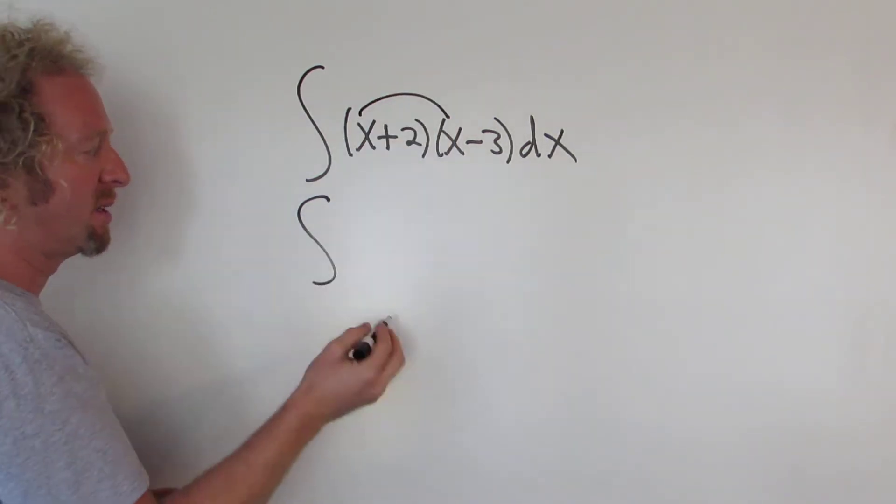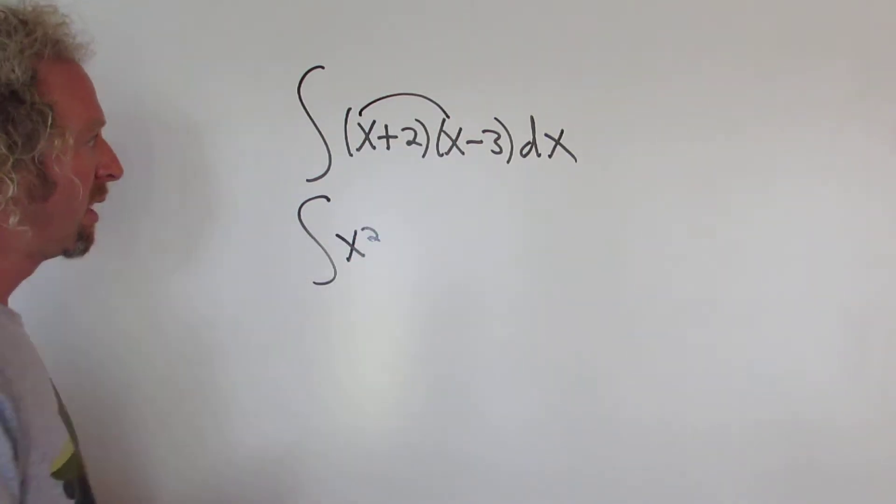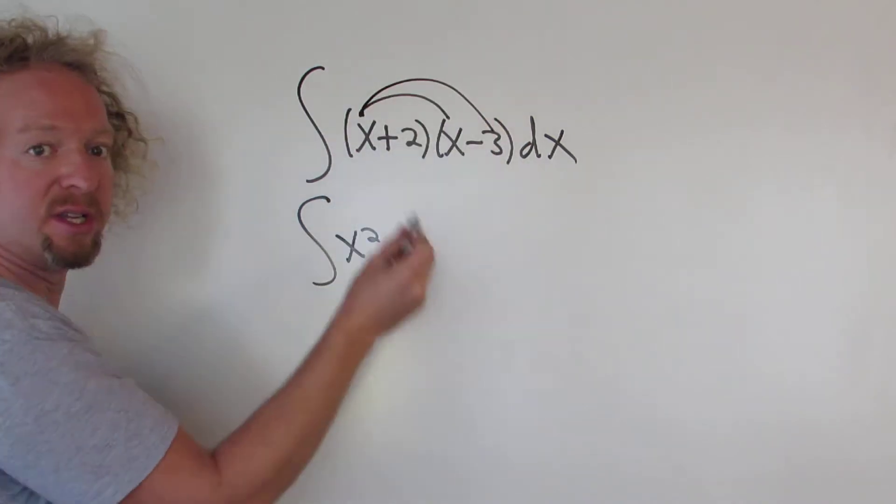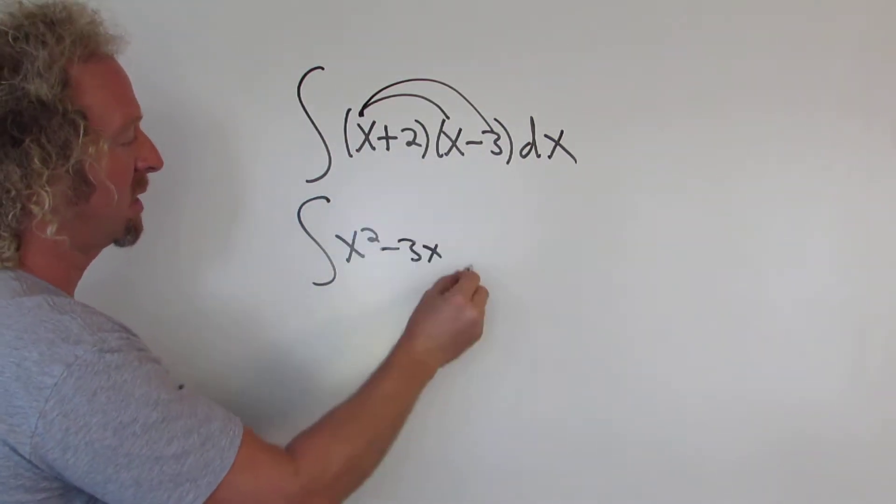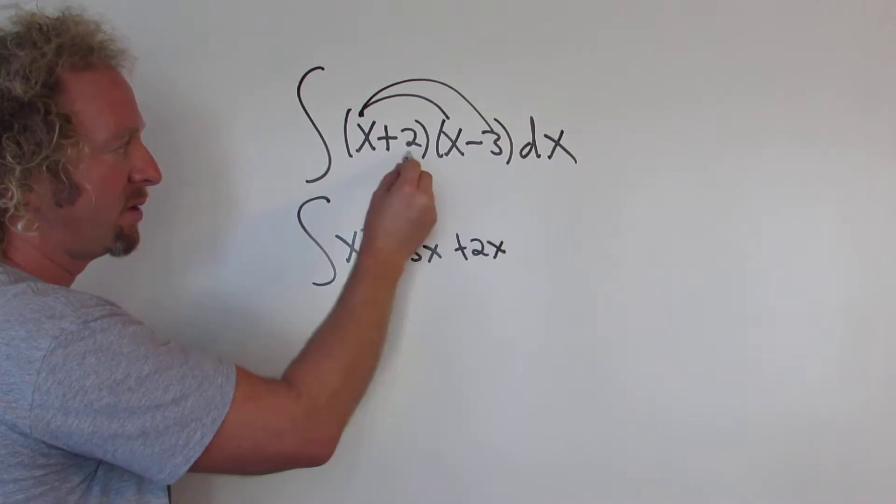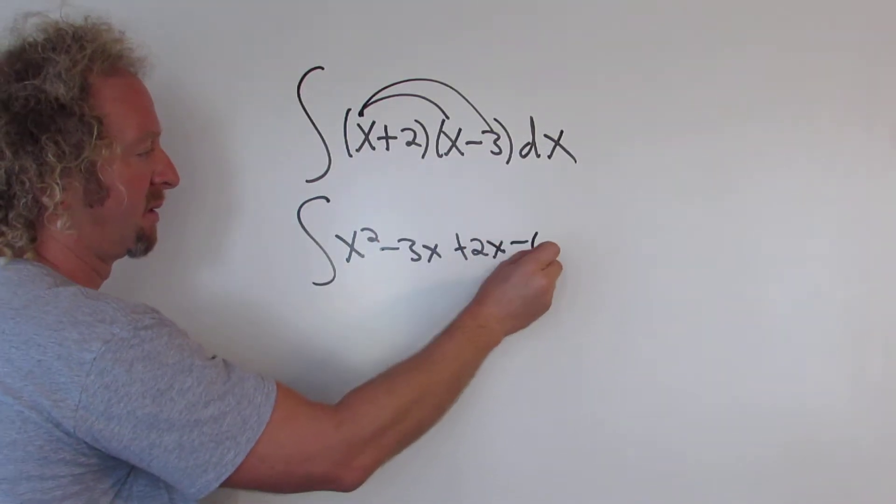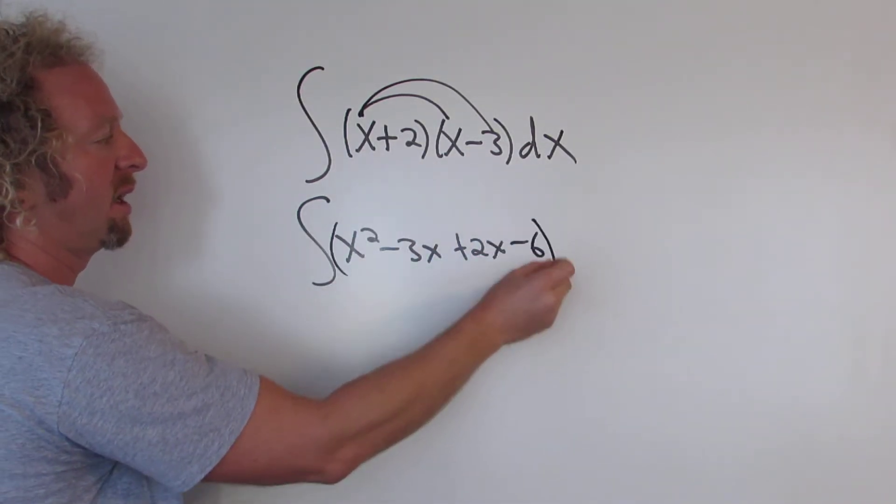We'll FOIL. x times x is x squared. x times negative 3 is negative 3x. 2 times x is 2x. And 2 times negative 3 is negative 6. We still have the parentheses and the dx.